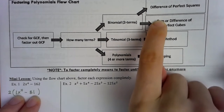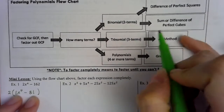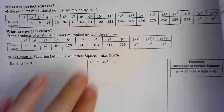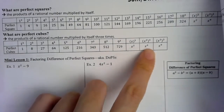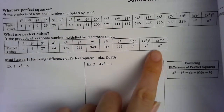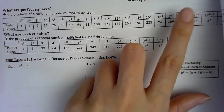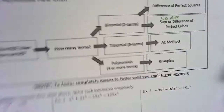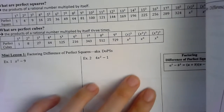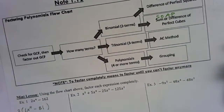Following the chart with a binomial, I have two options: difference of perfect squares or difference of perfect cubes. Checking the variable — x to the fourth is a perfect square. And 81 is on the perfect squares chart. So I'll use difference of perfect squares, which makes perfect sense because it is a difference.